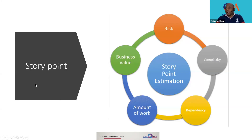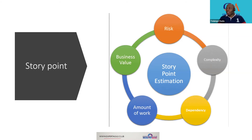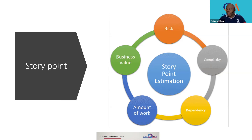So what makes up a story point? The factors considered are: the risk involved, the complexity, the dependencies, the amount of work to be done, and the business value. These are how we arrive at a story point for a particular work item. How risky is it to develop this piece of work? What is the complexity around it? Is this piece of work dependent on some other piece of work within the team or outside the team?